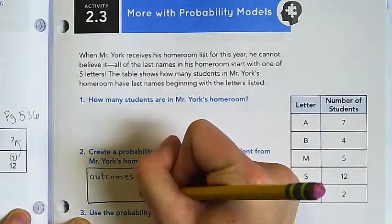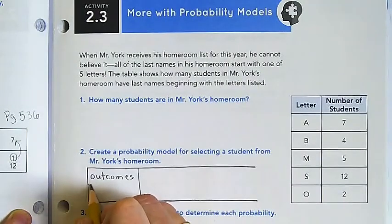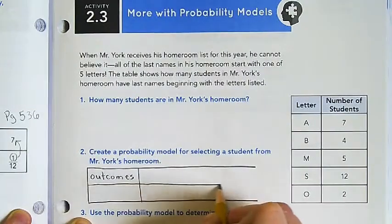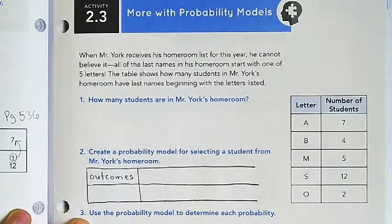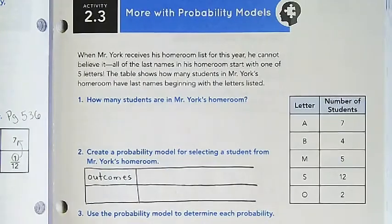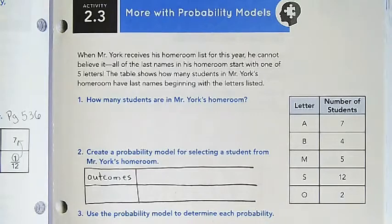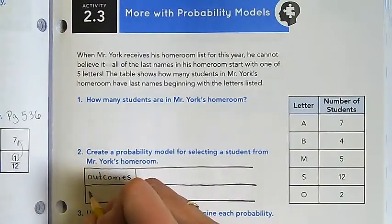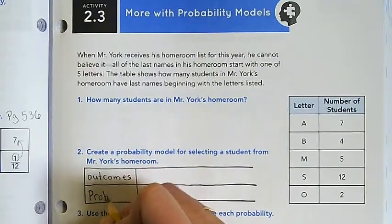The top will be your outcomes - what letter could their last name start with? Don't say it out loud. You are making the table. The bottom row is going to represent your probabilities of the outcomes above.